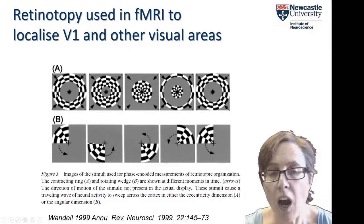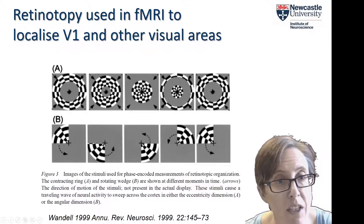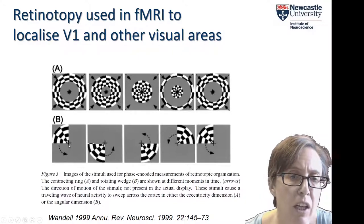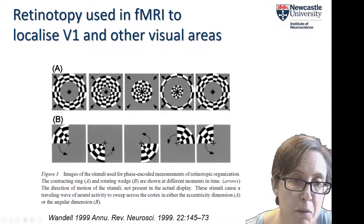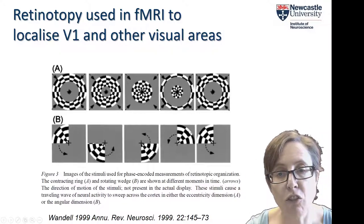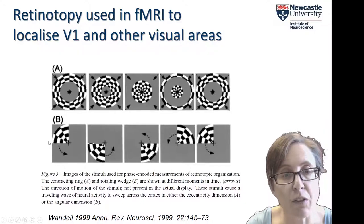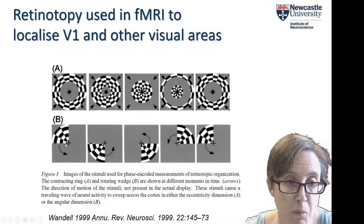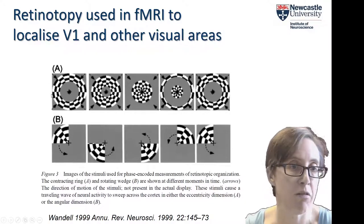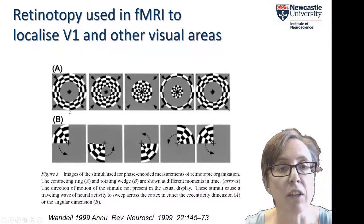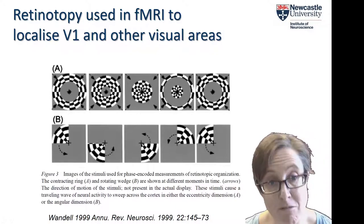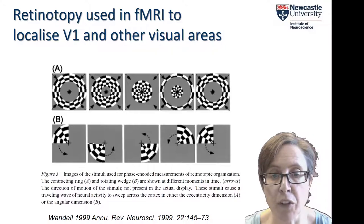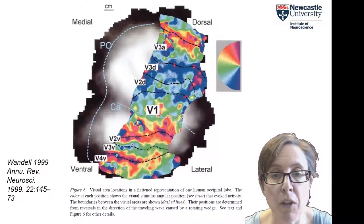You can have people lie in a scanner and look at patterns like a high-contrast flickering checkerboard image at a particular eccentricity. You go through this pattern — top left part of the visual field, bottom left, bottom right, top right, and so on — so you've got a chunk of activity going around the visual field, activating different parts of the brain. By correlating the brain activity with when you displayed these particular images, you can work out which regions of the visual field a given point in the brain — a given voxel — is actually responding to.